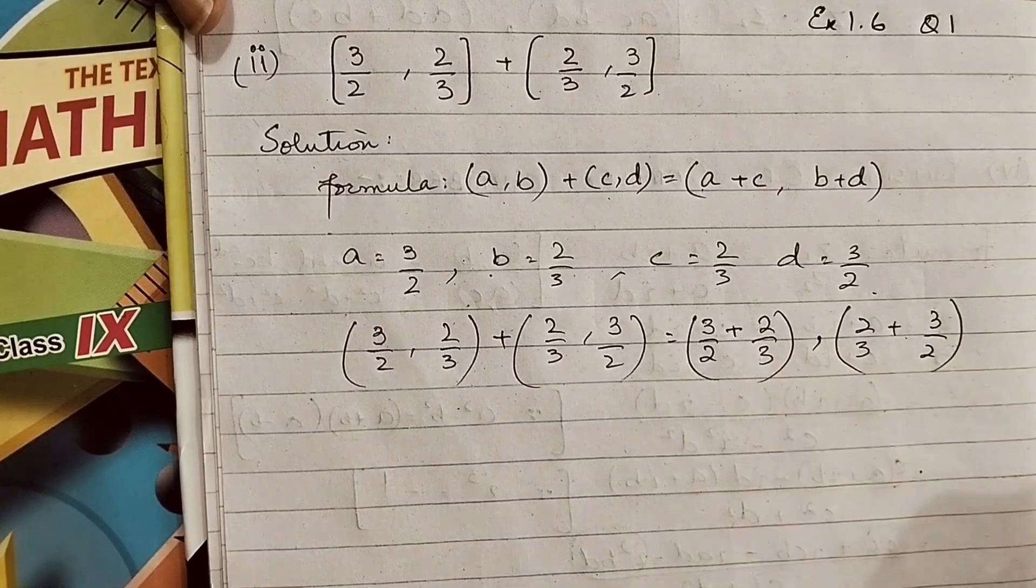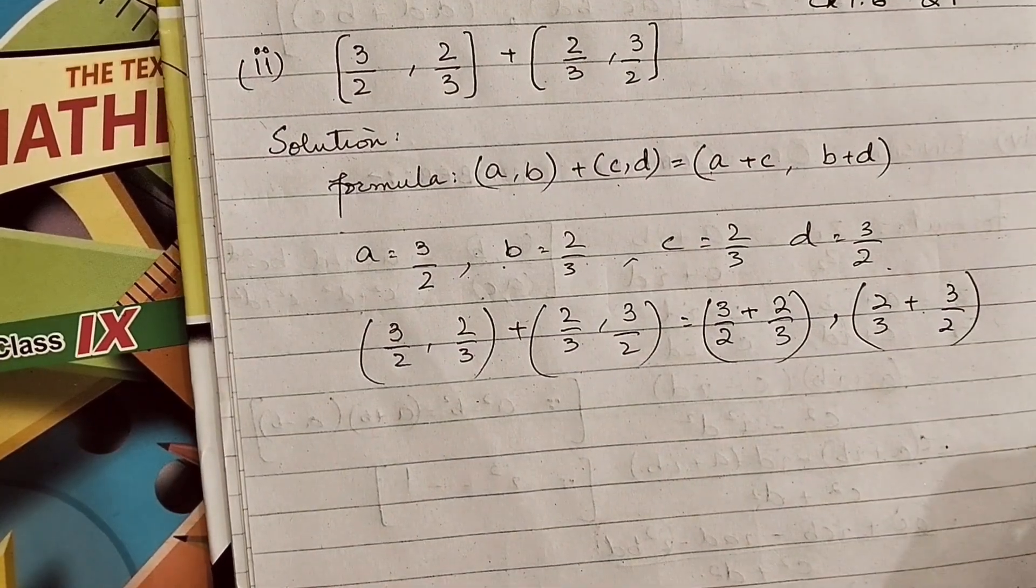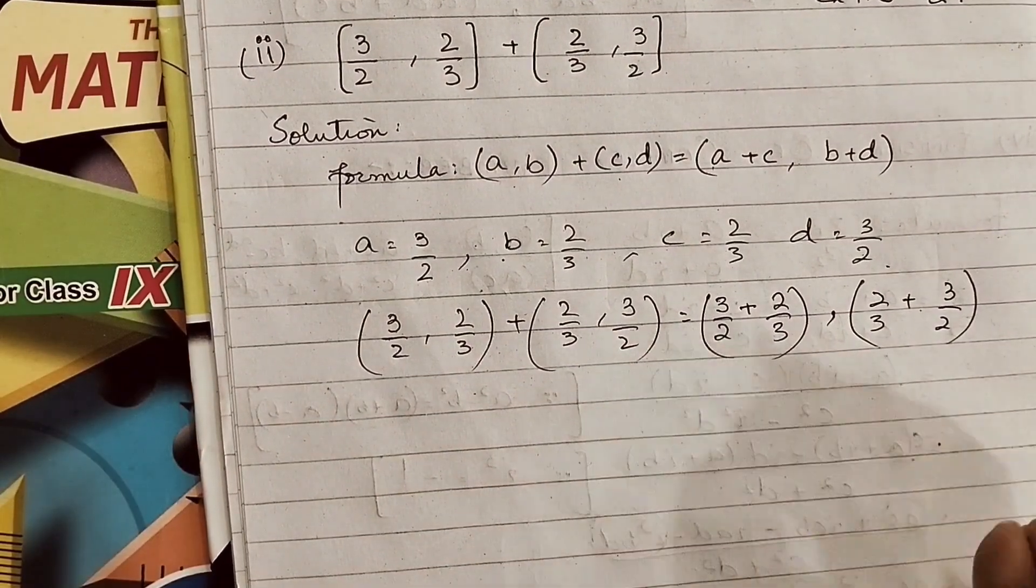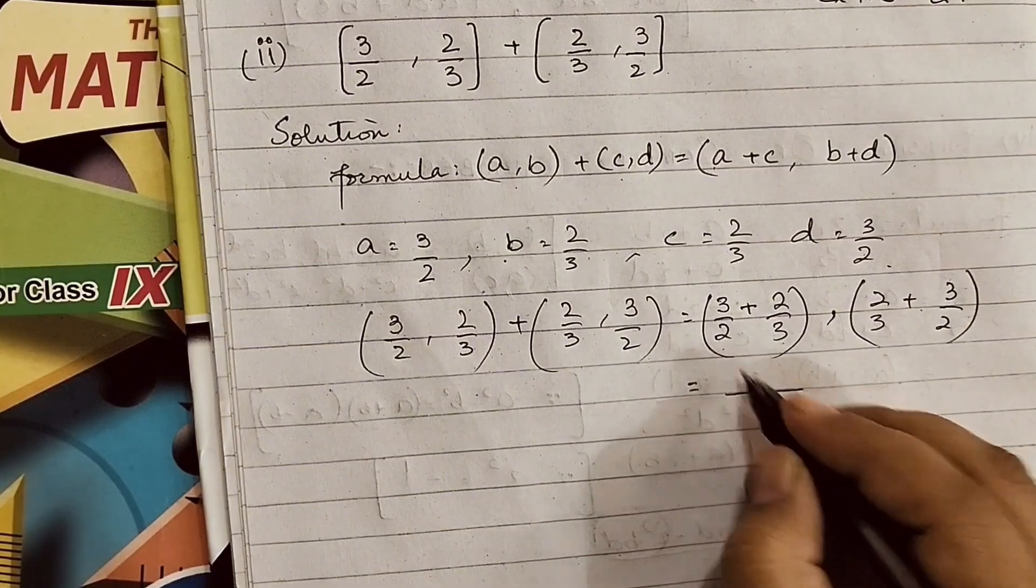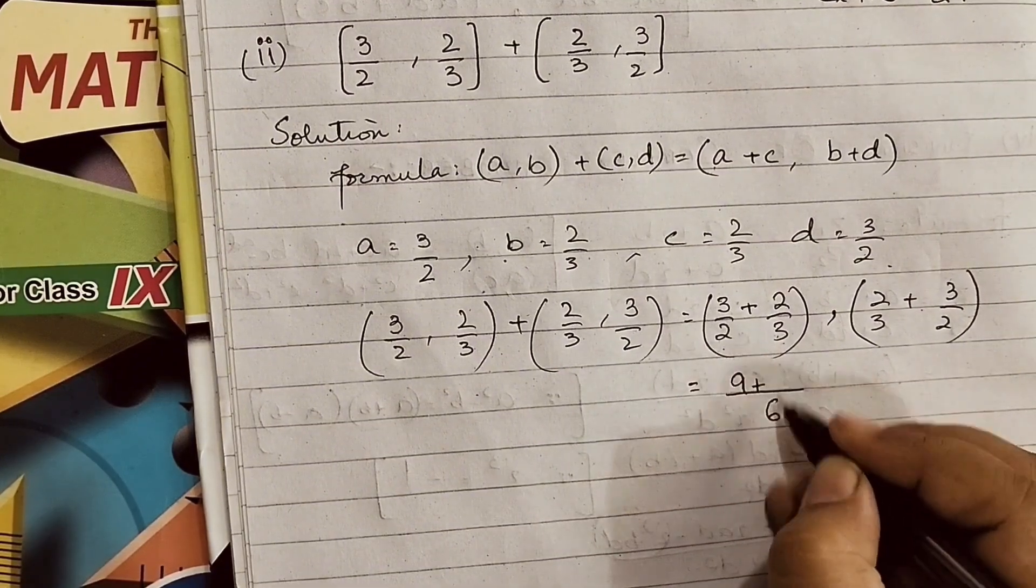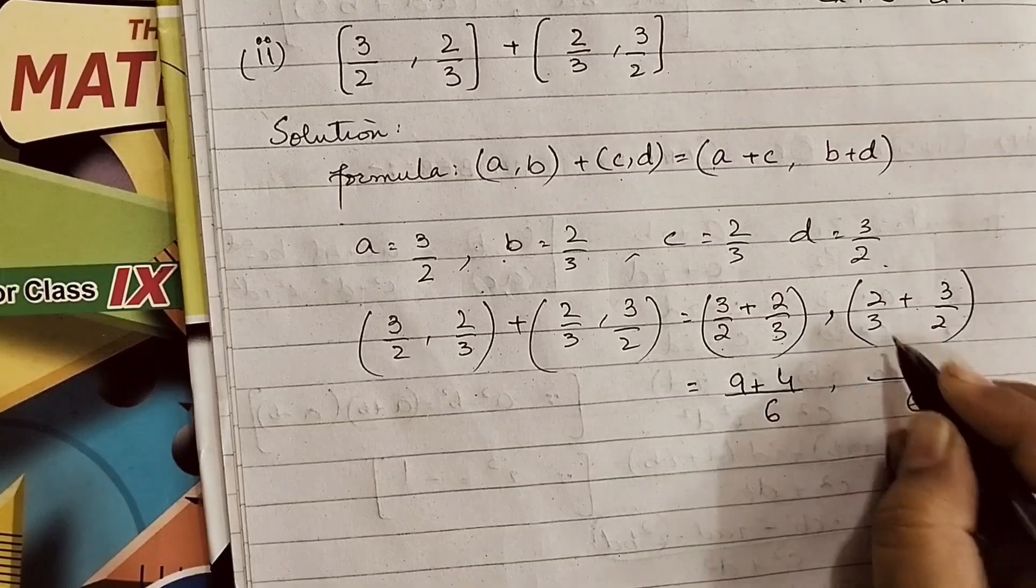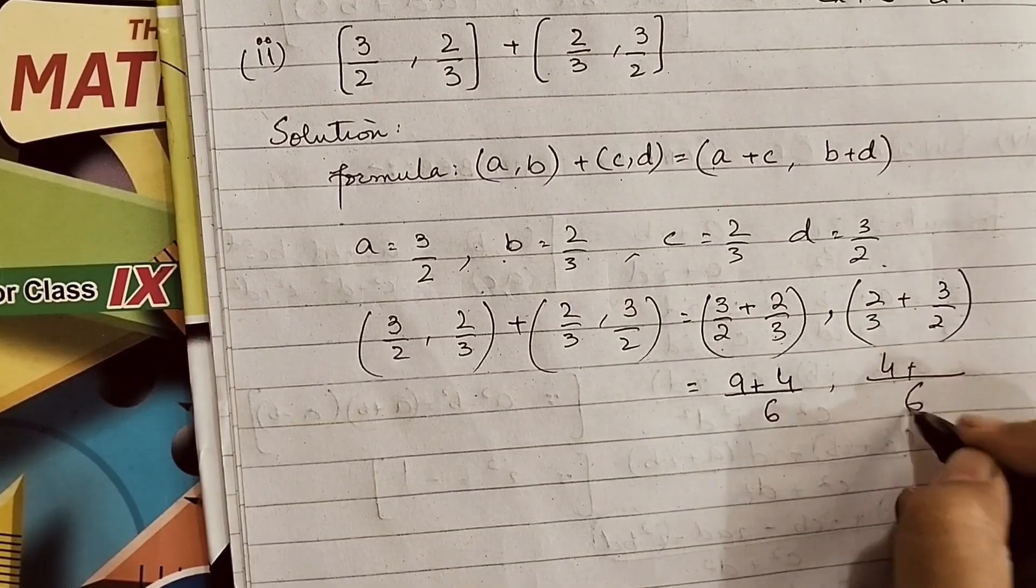we will take LCM, or make the denominators the same, whichever method is easier. I'm taking LCM. LCM of 3 and 2 is 6. For the first term: 2 times 3 is 6, 3 times 3 is 9. For the second: 2 times 2 is 4. Same for the second part: 6, and 2 times 2 is 4, plus 3 times 3 is 9.